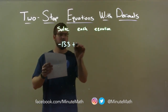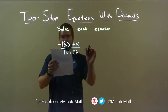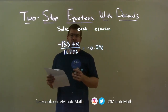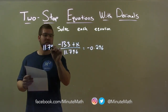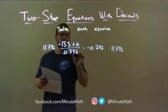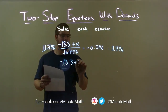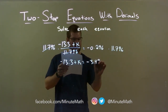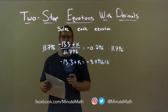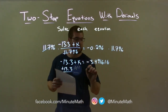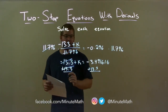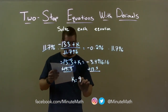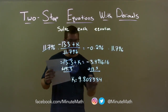Negative 13.3 plus k over 11.796 equals negative 0.296. First thing I want to do is multiply both sides by 11.796. The 11.796 cancels on the left, giving me negative 13.3 plus k left over. Negative 0.296 times 11.796 comes out to be negative 3.491616. Now I have negative 13.3 — to get rid of that I add 13.3 to both sides. The 13.3 cancels on the left, giving me k by itself. Negative 3.491616 plus 13.3 is 9.808384. And that is our final answer.